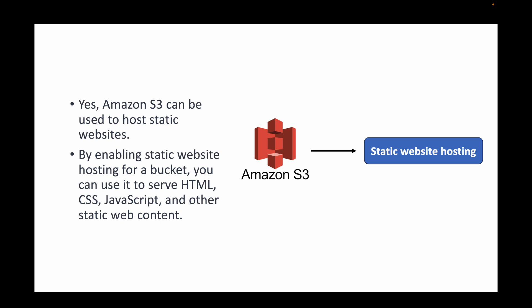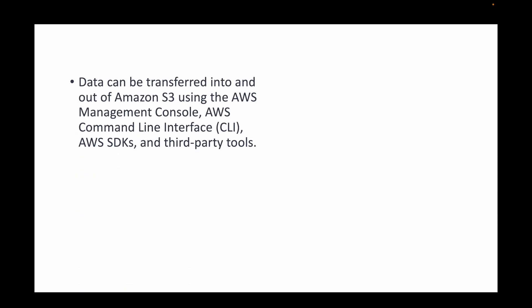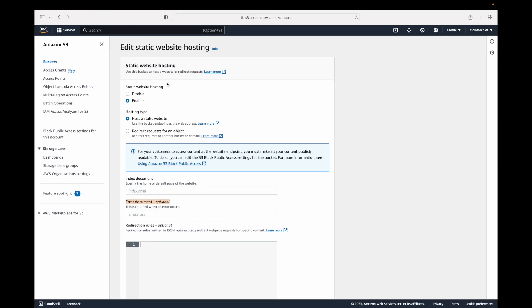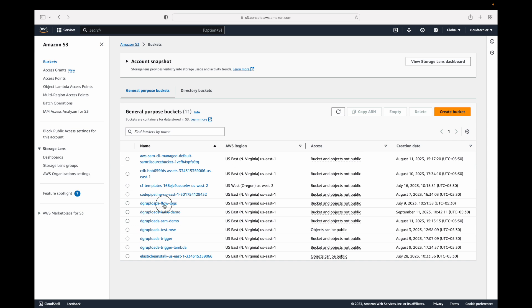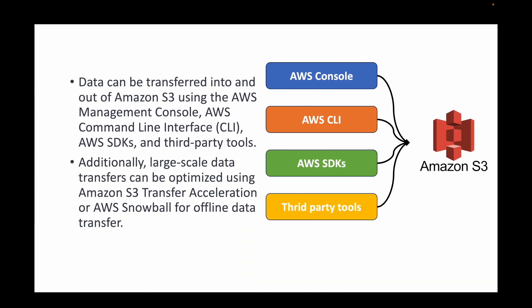The next question is: how can you transfer data into and out of Amazon S3? We can transfer data using the AWS console, the CLI, SDKs, or third-party tools. From the console, go to the respective bucket and use the Upload option. With the CLI, run the relevant CLI commands, or use SDKs to write programs. For large-scale transfers, you can use Amazon S3 Transfer Acceleration or AWS Snowball for offline data transfer.